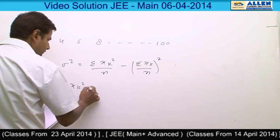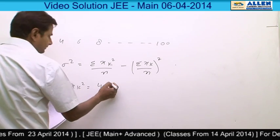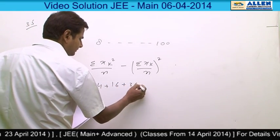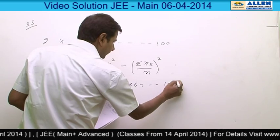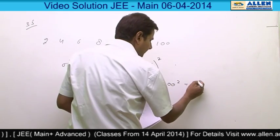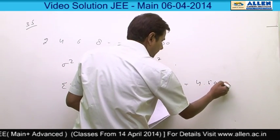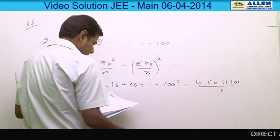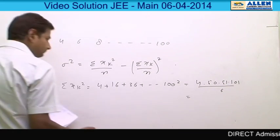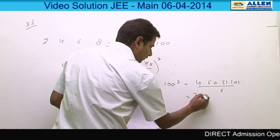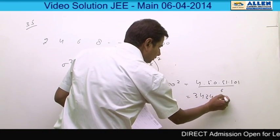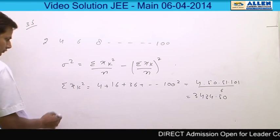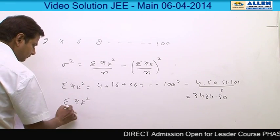Sigma x_k square, which means 4 plus 16 plus 36 and so on to 100 square, which becomes 4 into 50, 51, 101 upon 6, which becomes 3434 into 50.